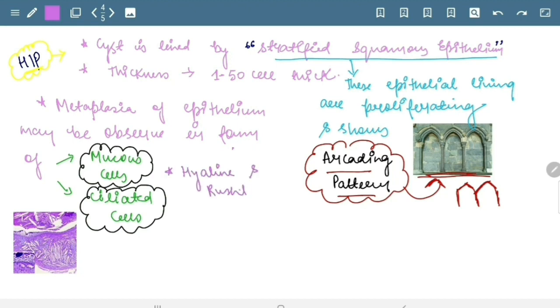In this, hyaline and Rushton bodies also present, which is also found in dentigerous cyst. Okay. And here these hyaline and Rushton bodies are linear, concentric, and curved.